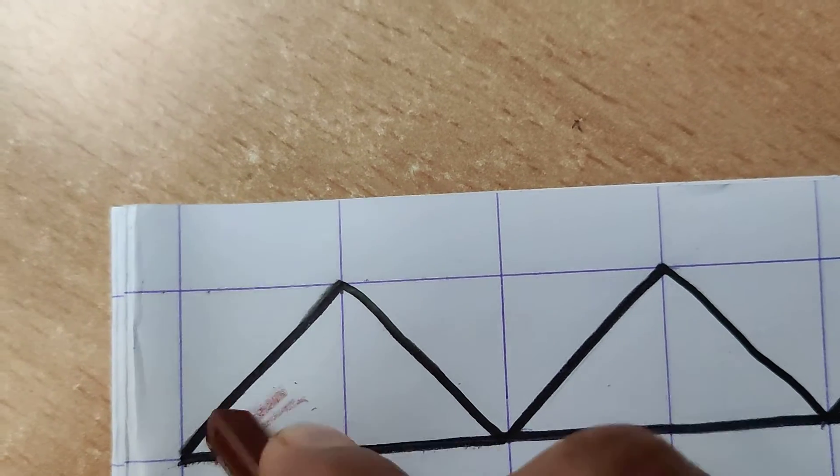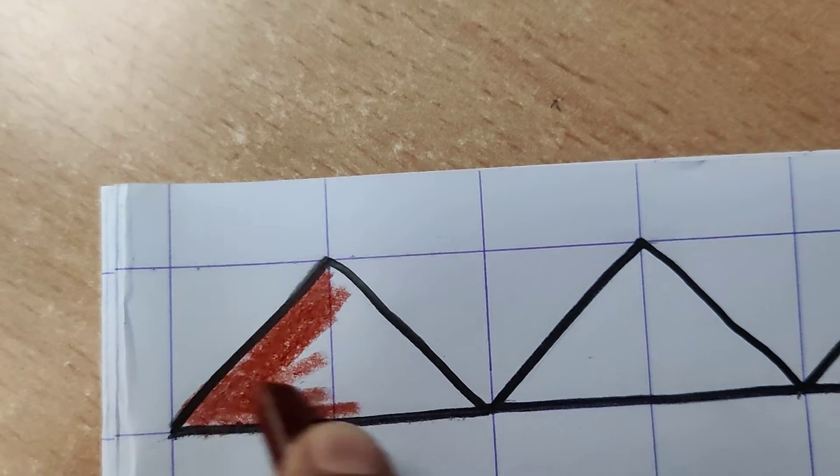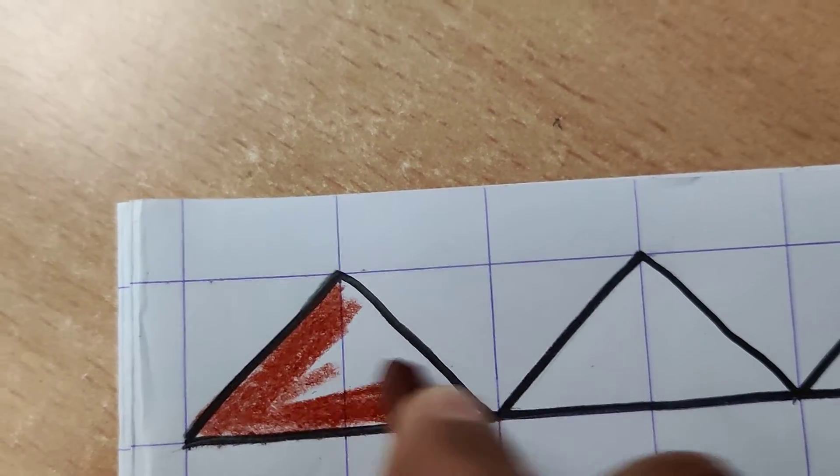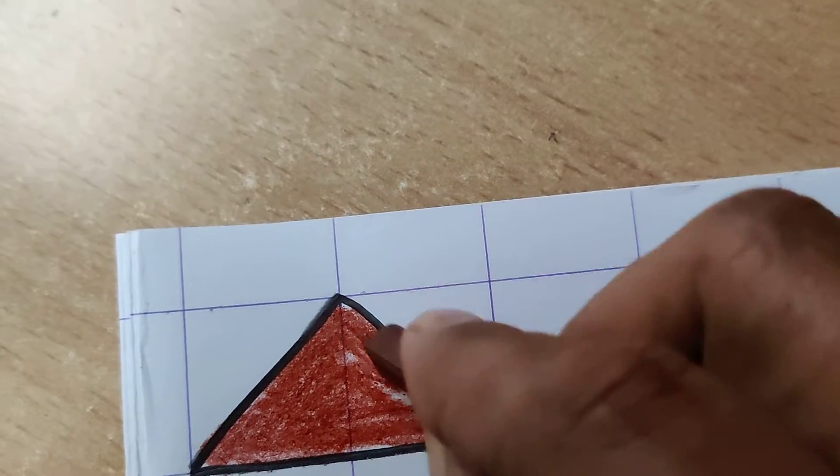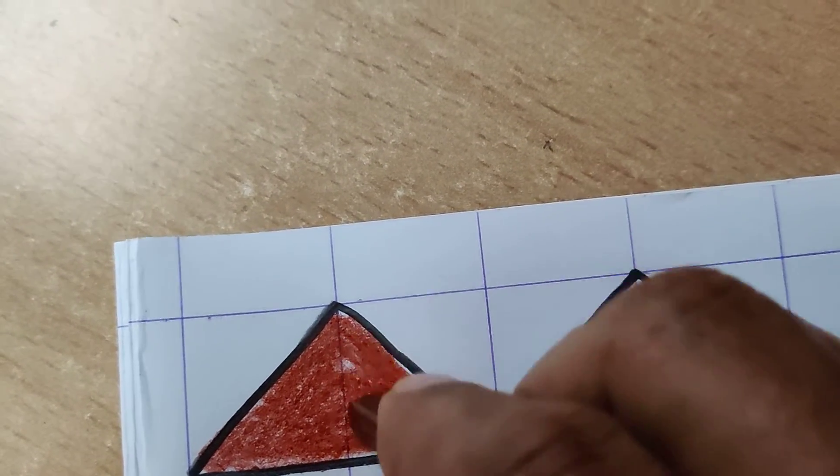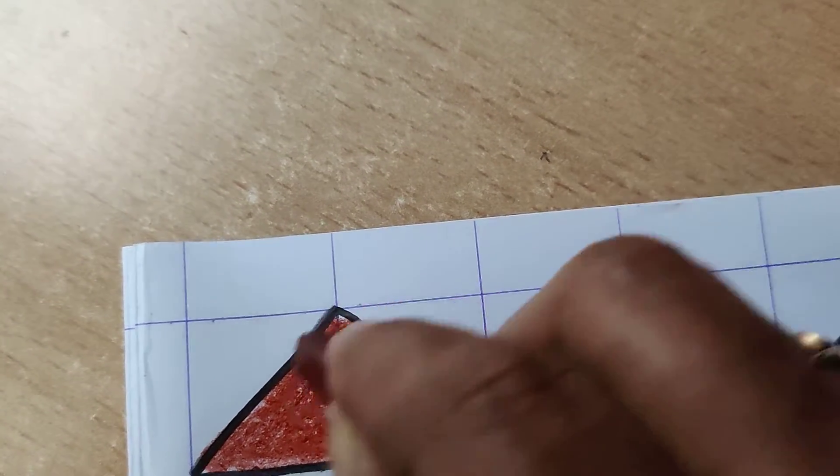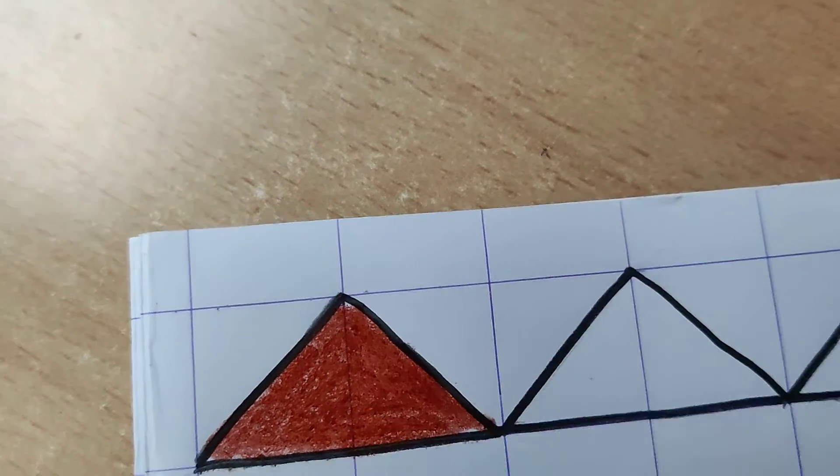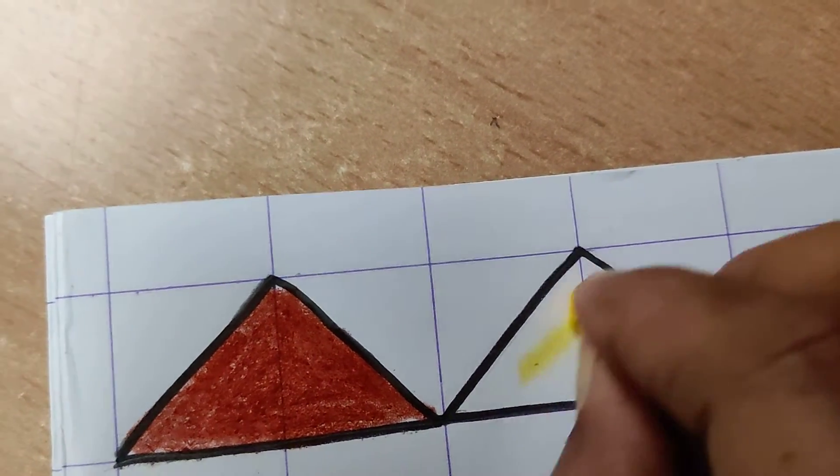Like this, you have to color smoothly. Line should not be shown of the color, see, like this. Then you will color the next triangle with yellow color, like this.